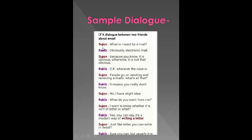Sujon is the one who speaks first. He says 'what is meant by email?' Then Rakib says 'obviously electronic mail.' Then again Sujon says 'because you know it is obvious, otherwise it is not that obvious.' Rakib says 'okay, whatever the case is.'